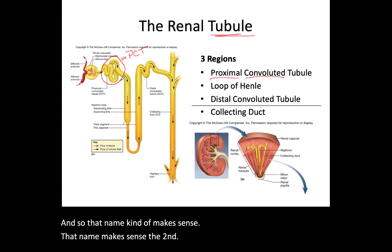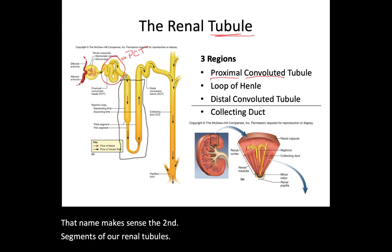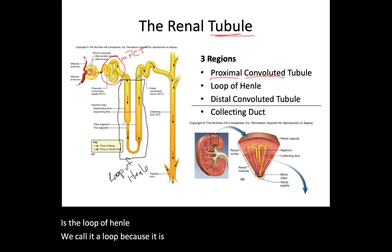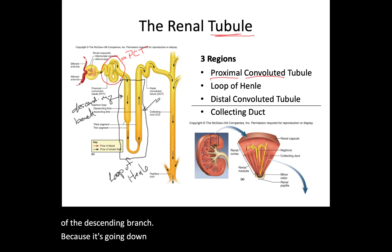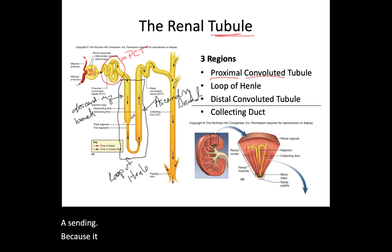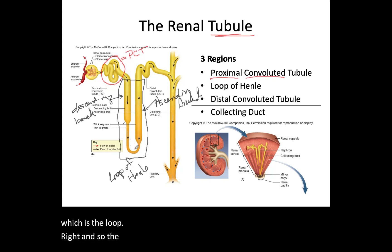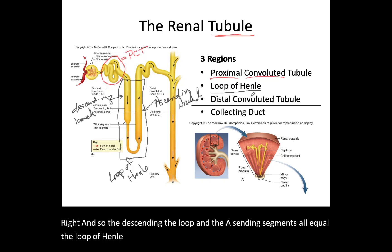The second segment of our renal tubules is the loop of Henle. We call it a loop because it is just that — it is a loop. That loop is made up of the descending branch because it's going down, and the ascending branch because it is heading up. The thinner section in the middle is the loop itself. The descending, the loop, and the ascending segments all equal the loop of Henle, named after the guy that discovered it.